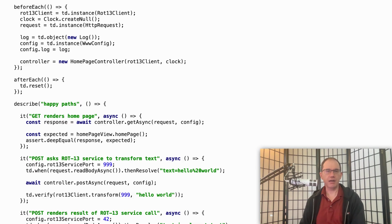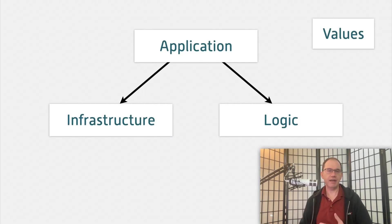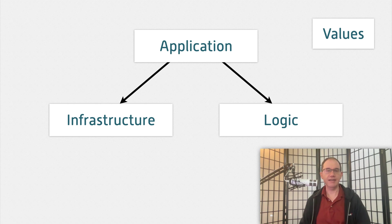So I started using mocks, but they were complicated and made my code hard to refactor. I tried modifying my design to separate infrastructure from logic, using techniques similar to functional core, imperative shell, and hexagonal architecture, but that required architectural changes that were out of reach for legacy codebases, and it didn't help with the infrastructure-heavy code that's so common in today's code.